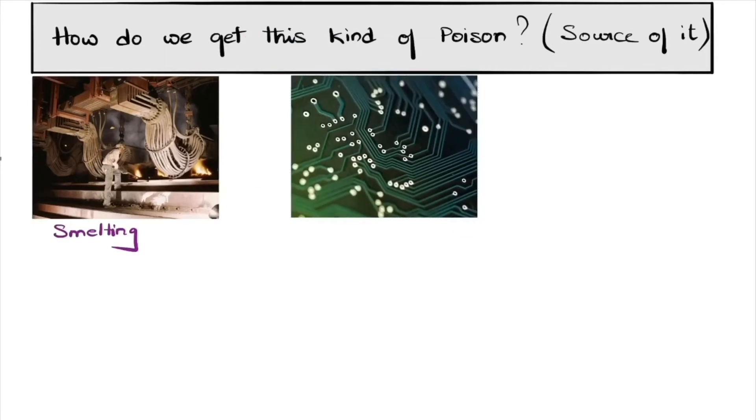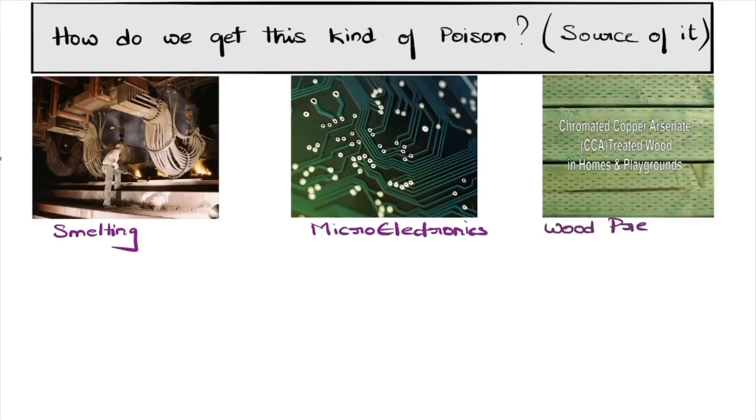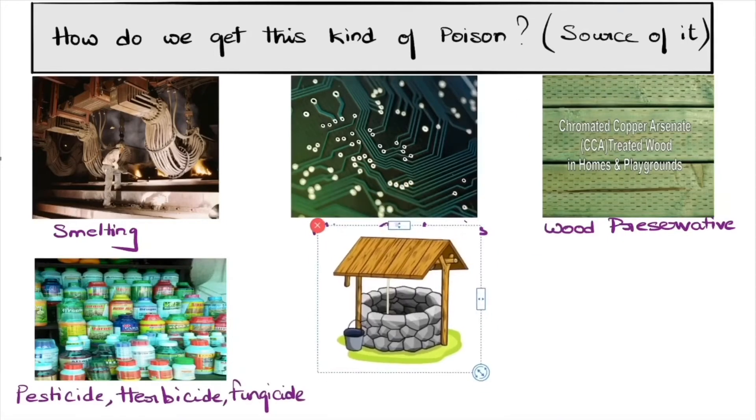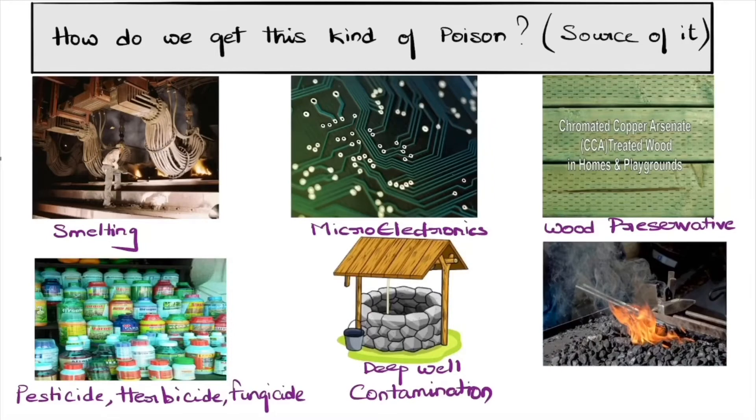However, the chronic cases are at rise due to industrial and occupational exposure like smelting of the ores, microelectron industry. Arsenic is one of the elements in wood preservatives. It's also used in pesticides, herbicides, fungicides, and arsenic is released when burning of coal is done.